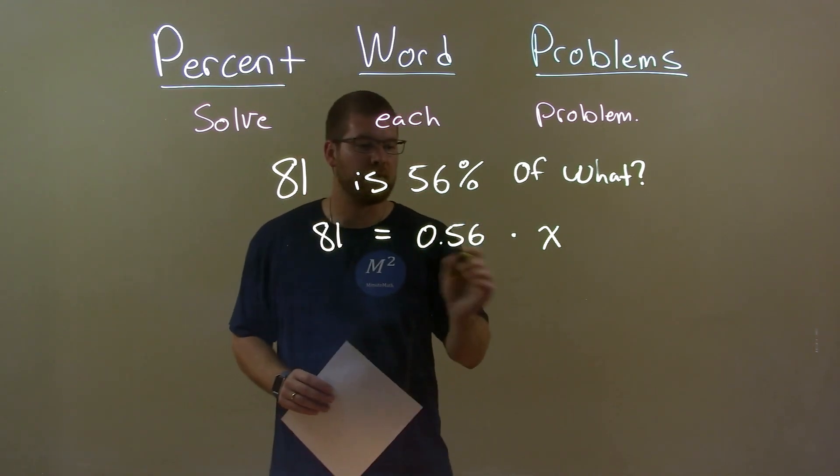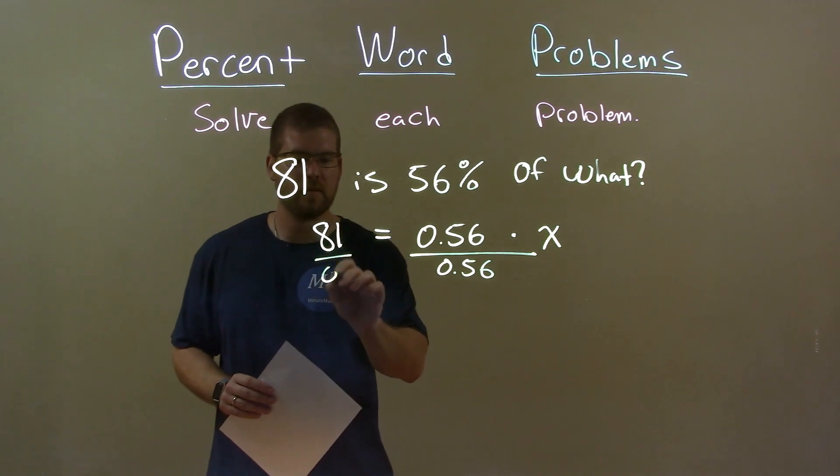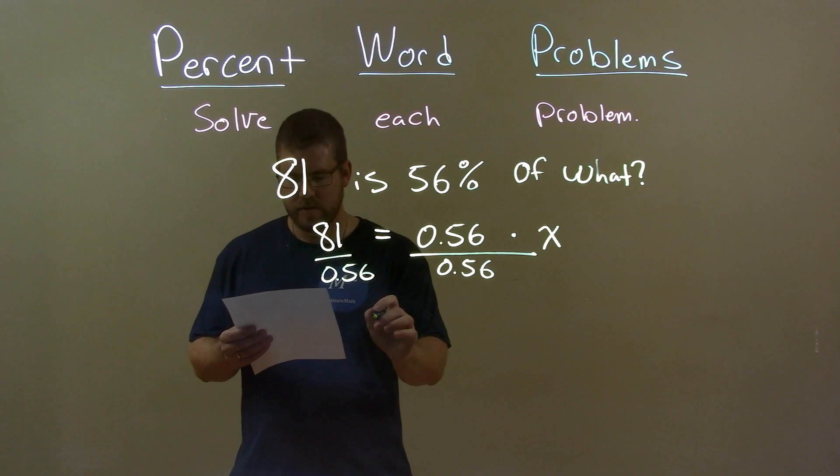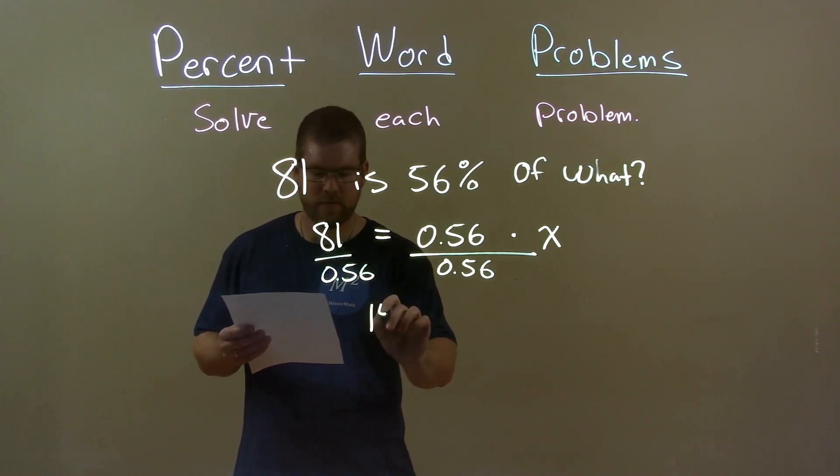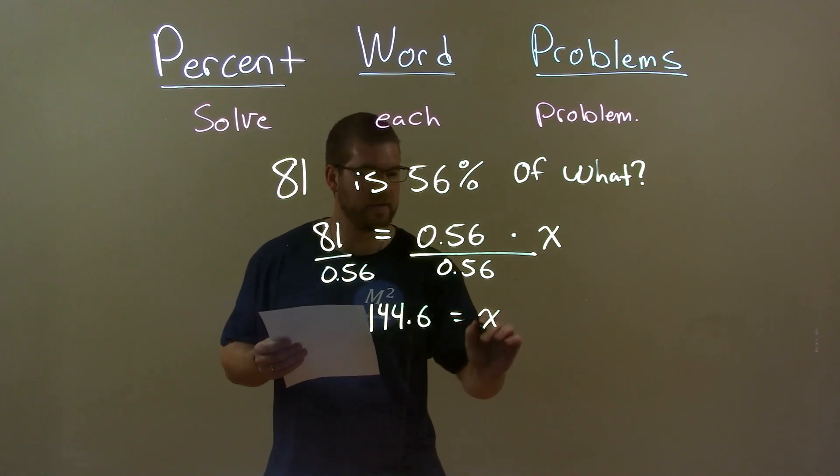Now we just solve for x. So we divide by 0.56 on both sides, and we get an answer here of 81 divided by 0.56, which is 144.6. And that's equal to our x.